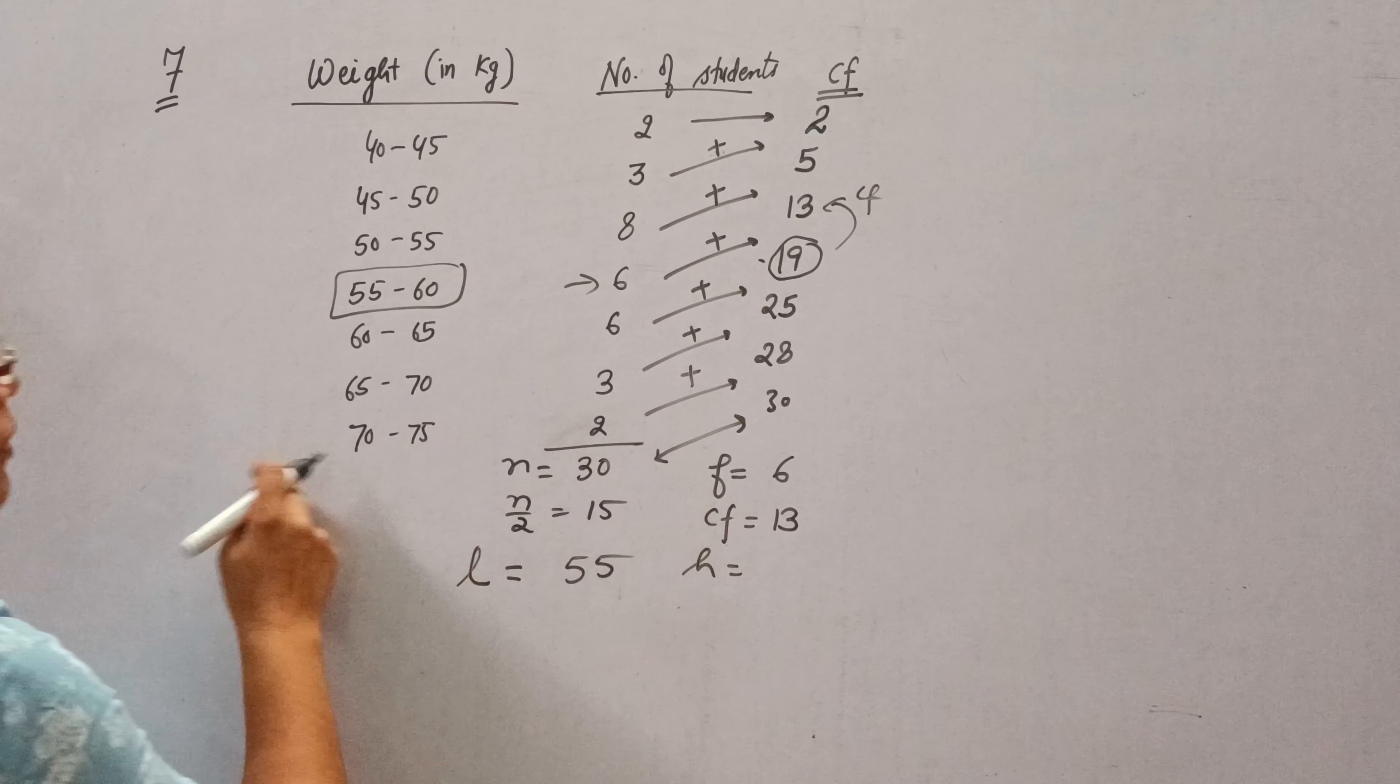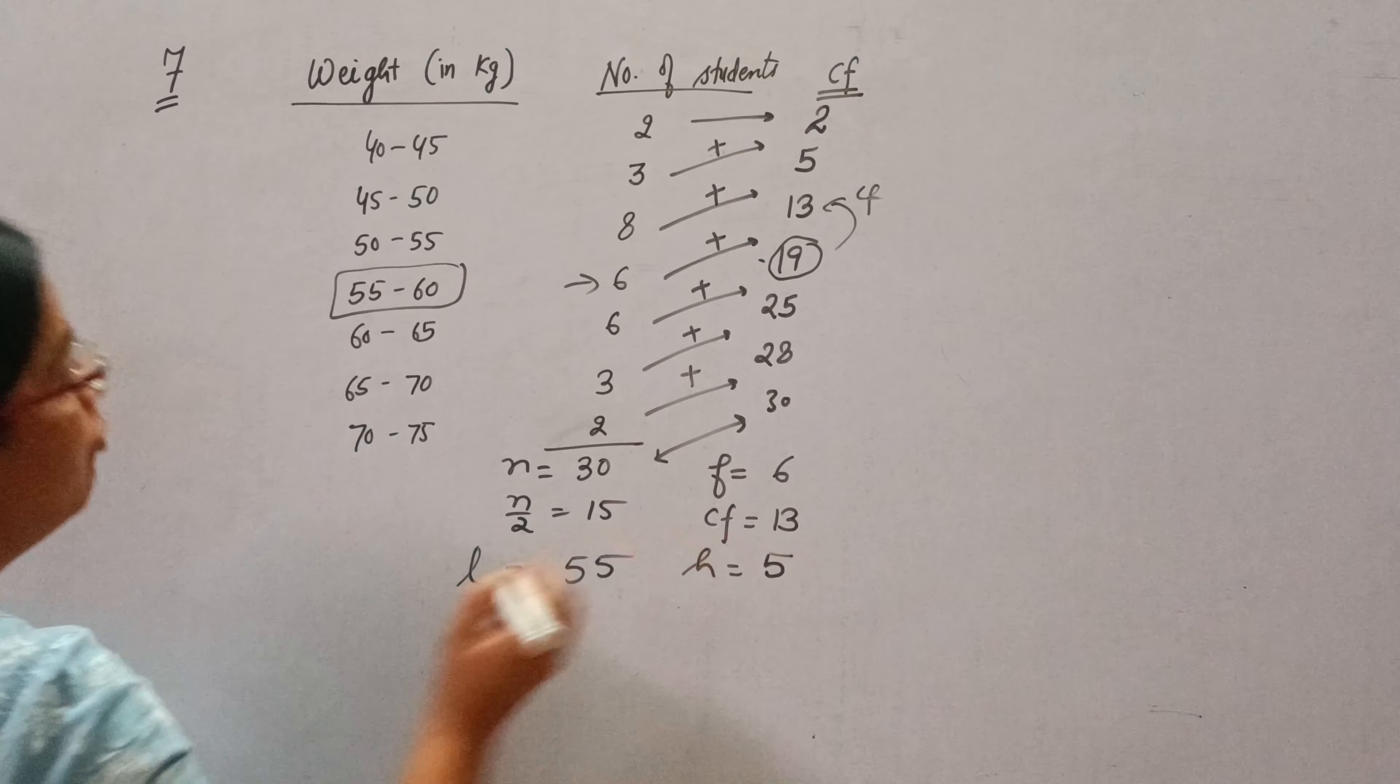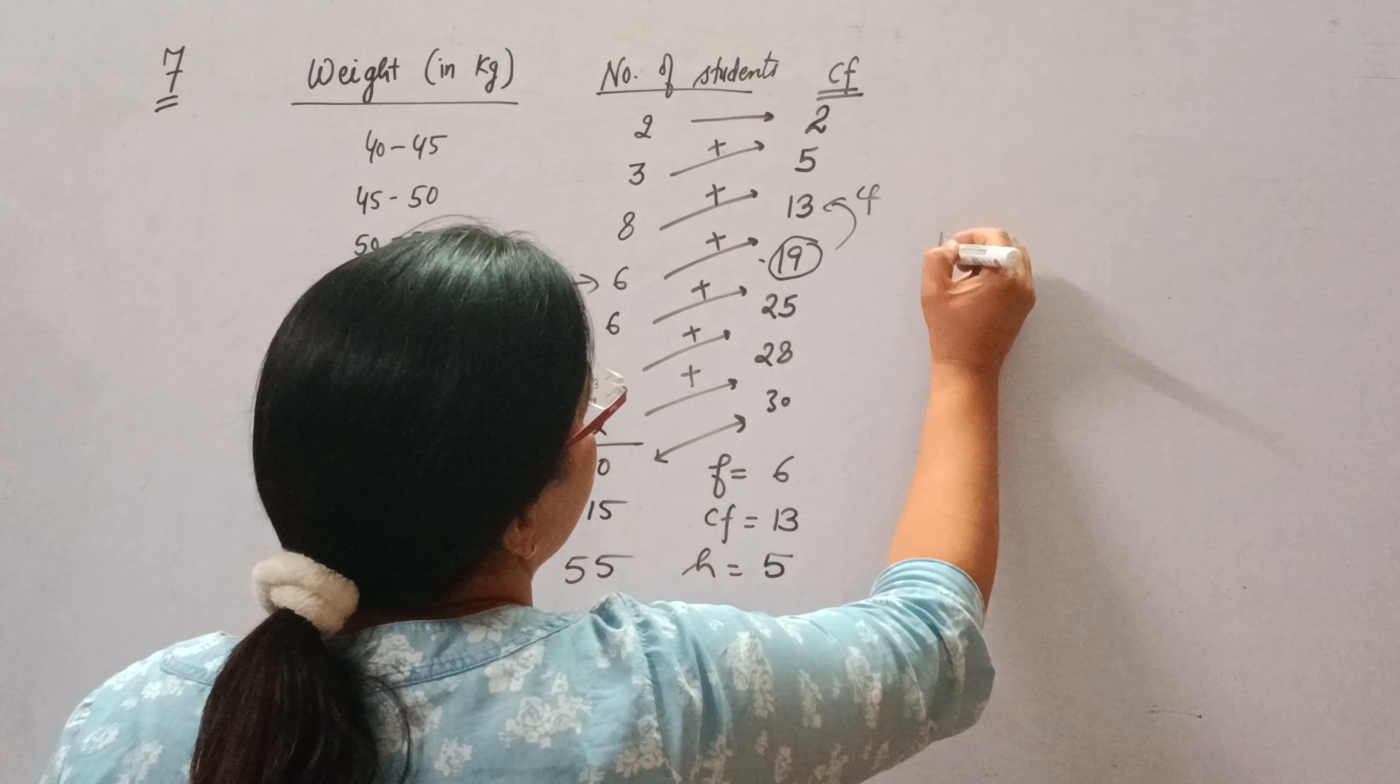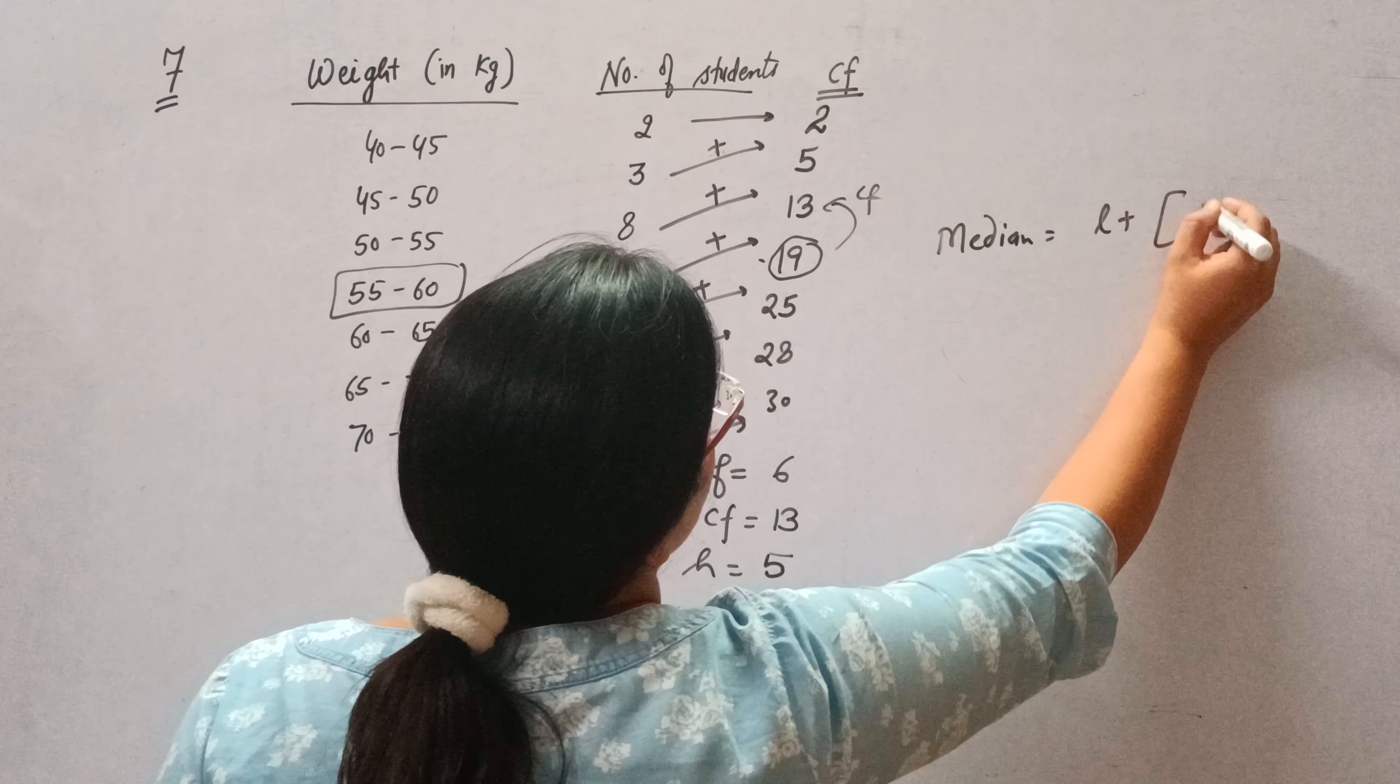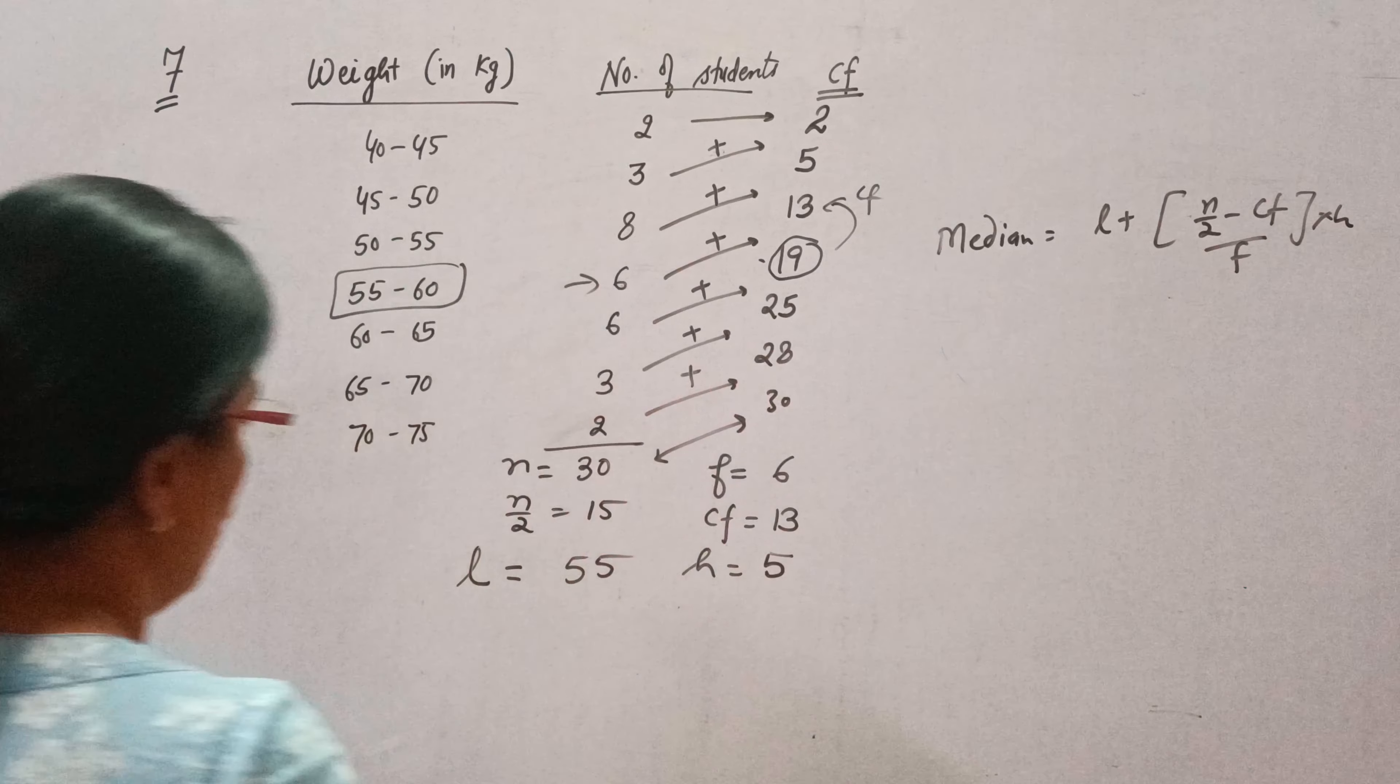And class size, what is the difference between the lower limit and upper limit? You can see the difference is 5. Now we will put all these values in the formula of median. And median is L plus n by 2 minus CF upon F into H.